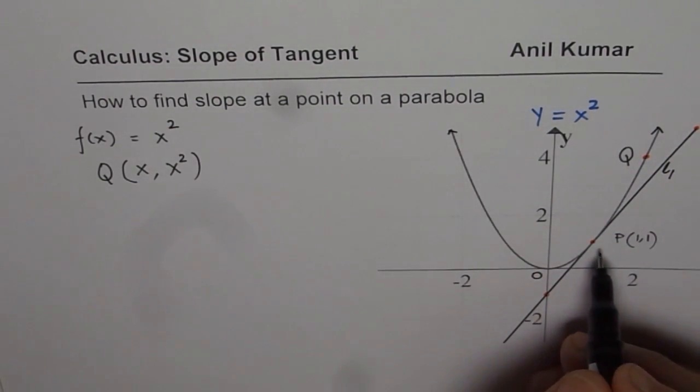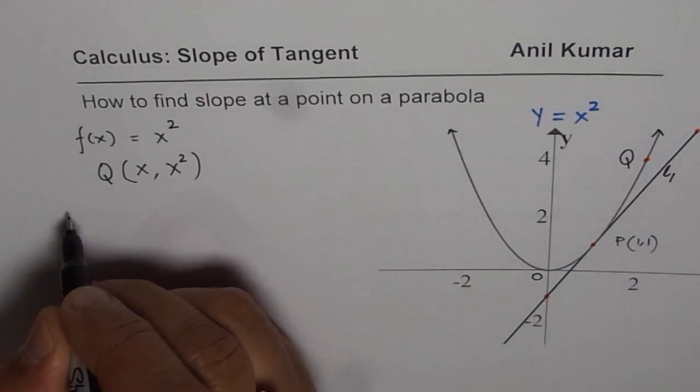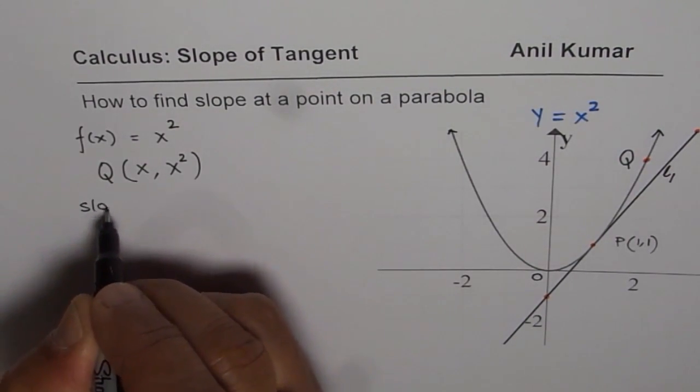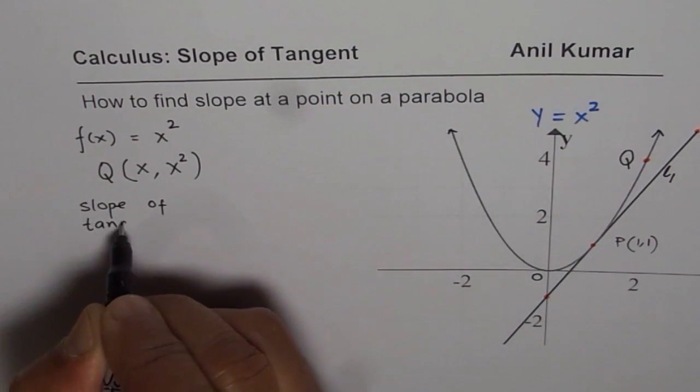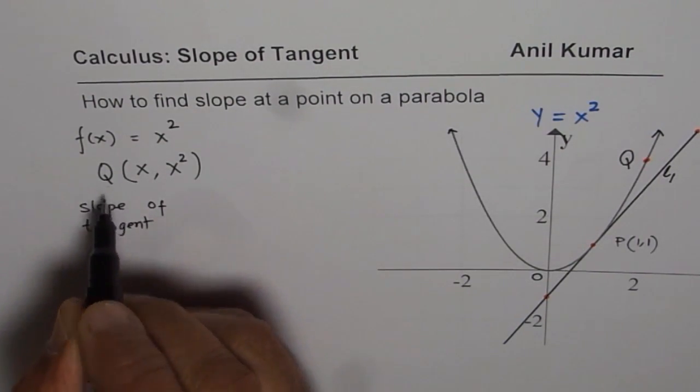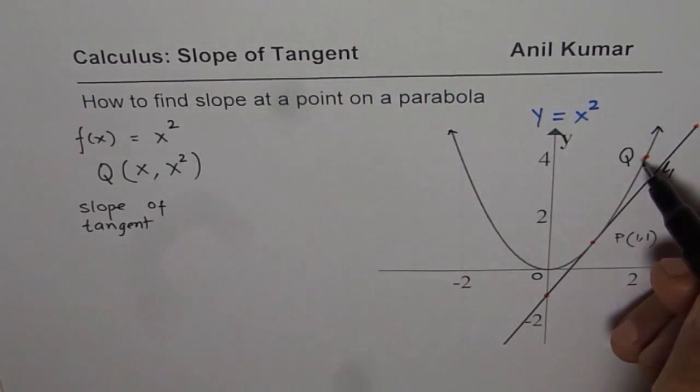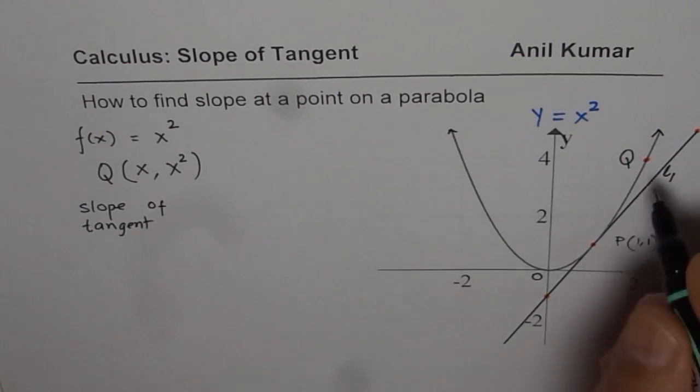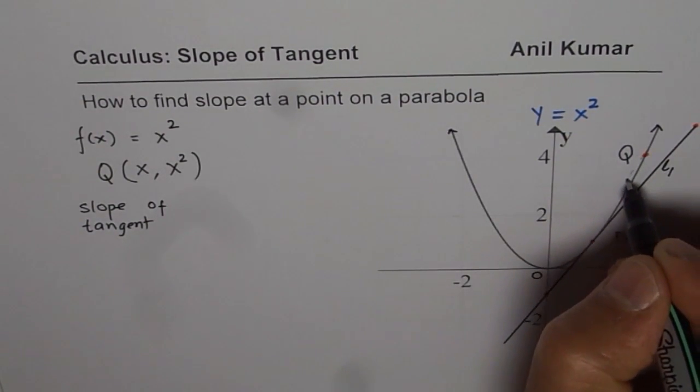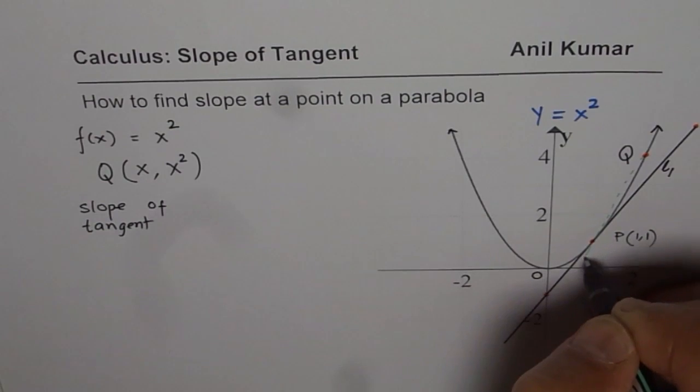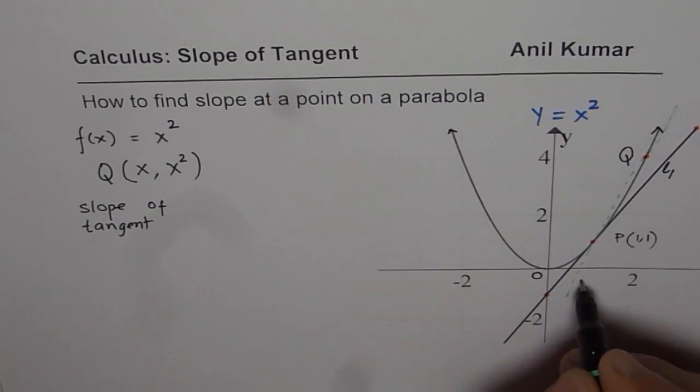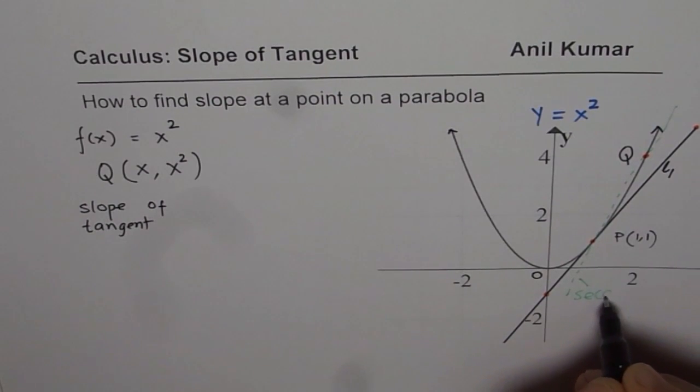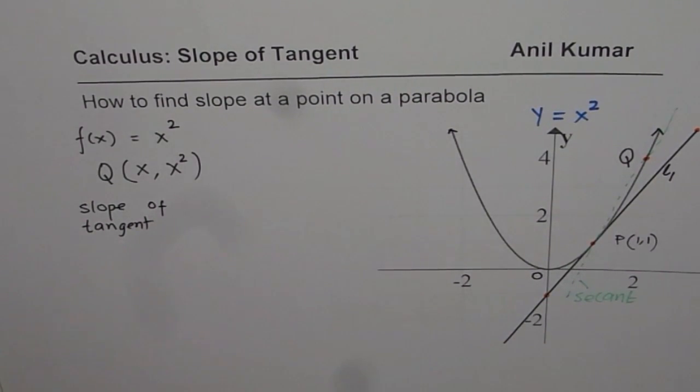Now we need to find slope of tangent. If the point Q is kind of like this, then joining these two points, what do we get? Joining these two points, we get a secant. This is what we call as a secant.